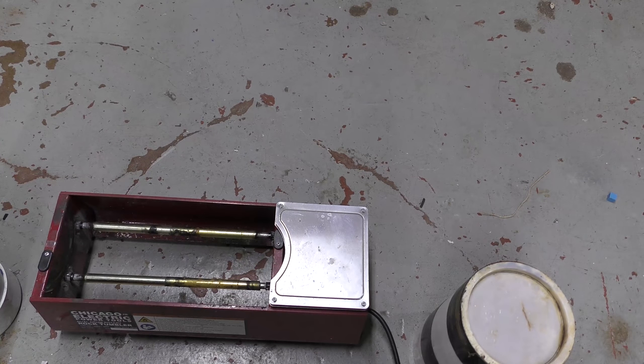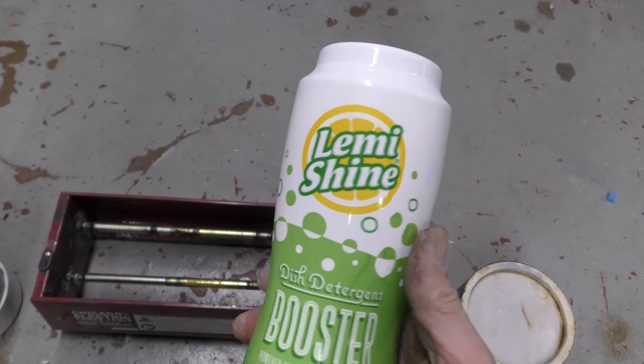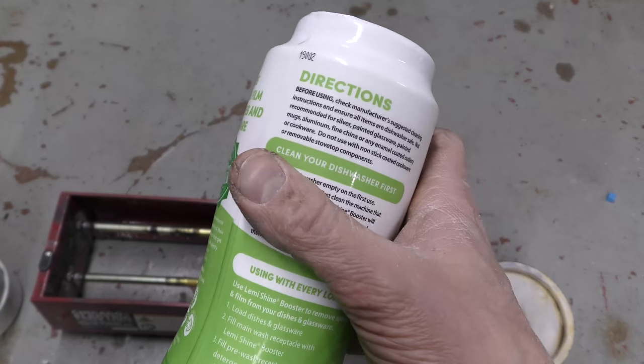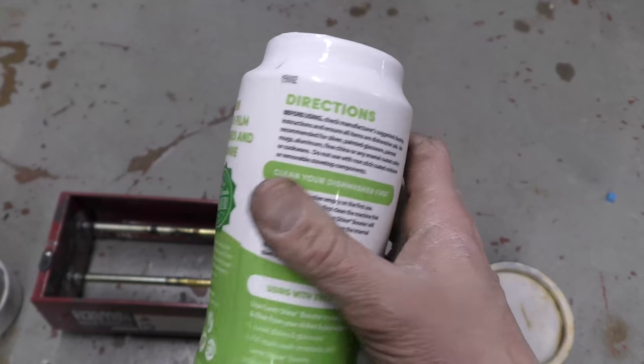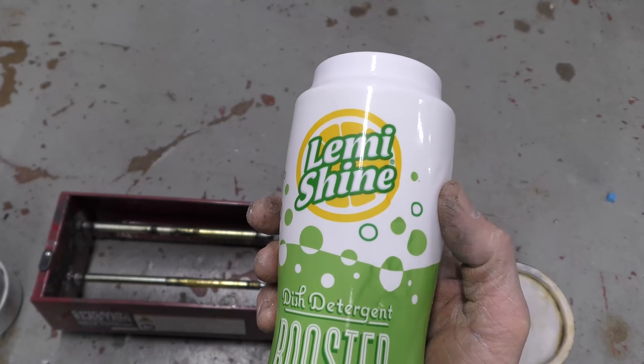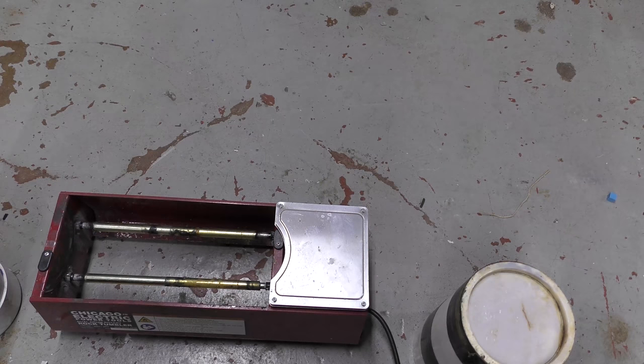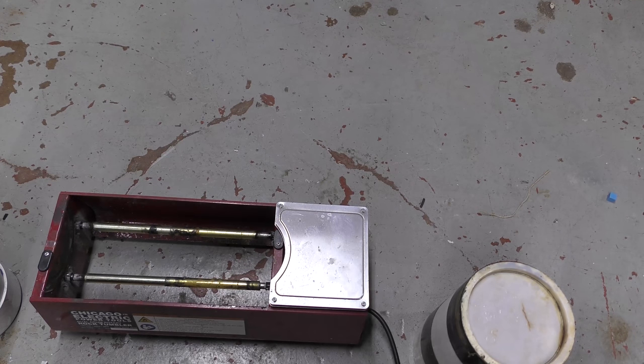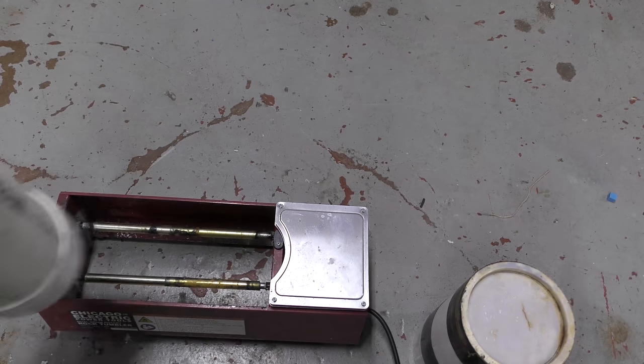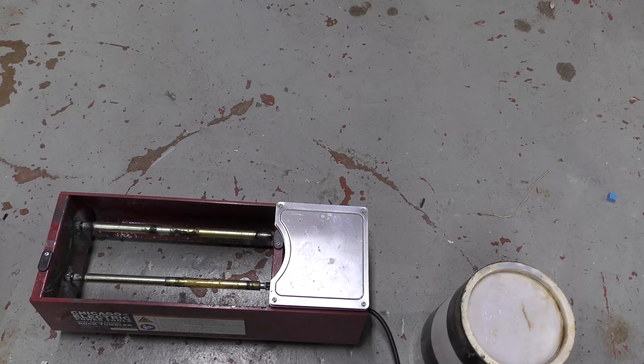Now, I'm going to add just about a tablespoon of this Lemi Shine, which is just citric acid. It would be the same thing. But this works really well. Citric acid will work, or Lemi Shine. I like Lemi Shine a little bit better. It's got some soap in it. And then a drop of Dawn dish soap. Along with this media, will shine just about anything up, especially copper.